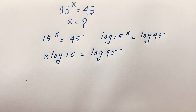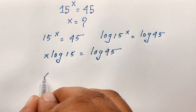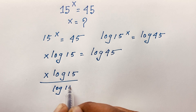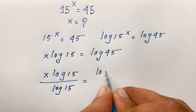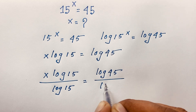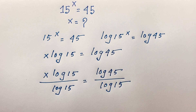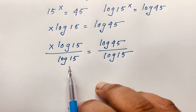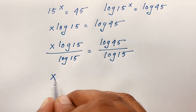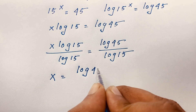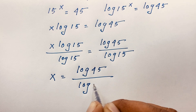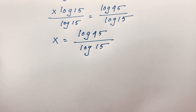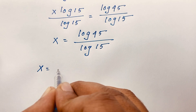Now I divide both sides by log 15. So x times log 15 over log 15 is equal to log 45 over log 15. The log 15 on the left cancels out, and we find that x is equal to log 45 over log 15.